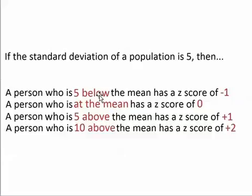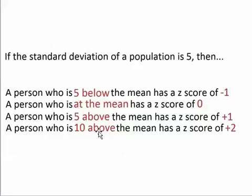A student in the class with an exam score that's 10 above the mean would have a z-score of plus 2, because if the standard deviation of the class is 5, then a person who is 10 above the mean is two standard deviations above the mean. If you start at the mean and you go up by 5 and then you go up by 5 again, then you've gone up by two standard deviations of 5 and you've reached a student who is 10 above the mean.